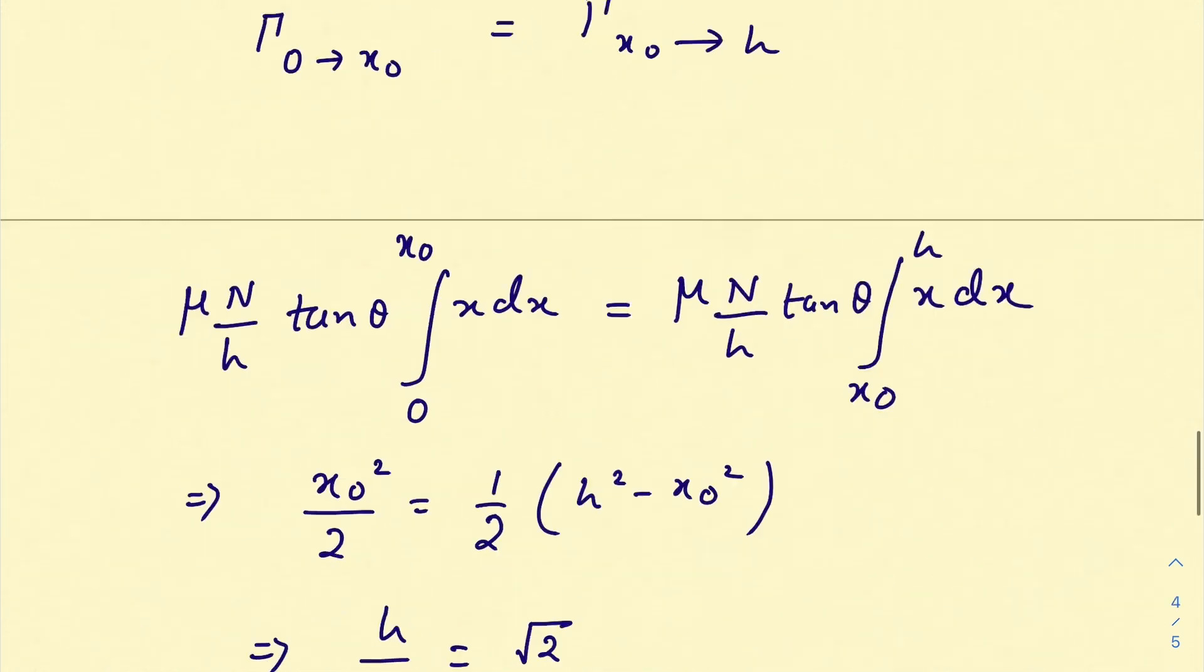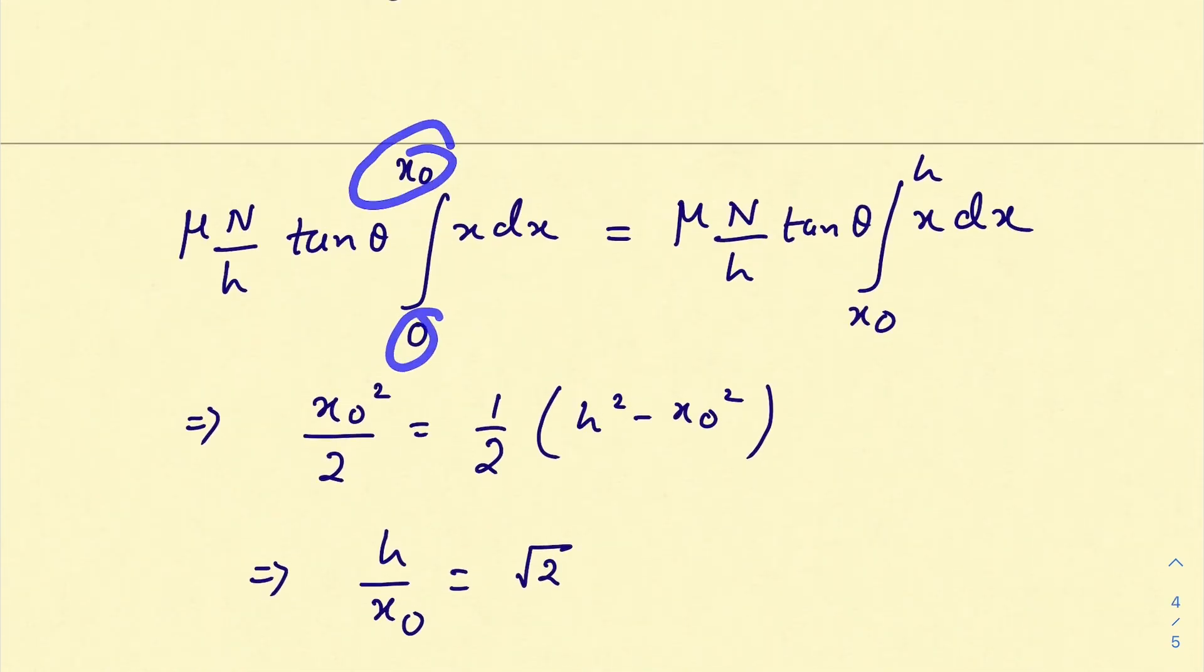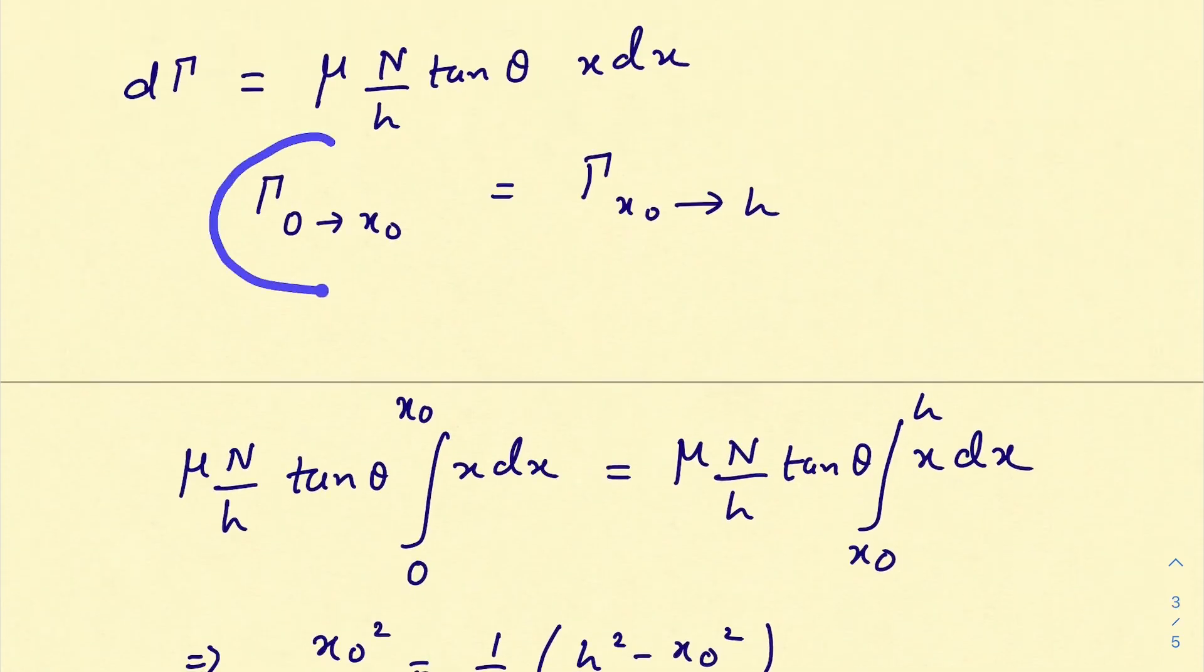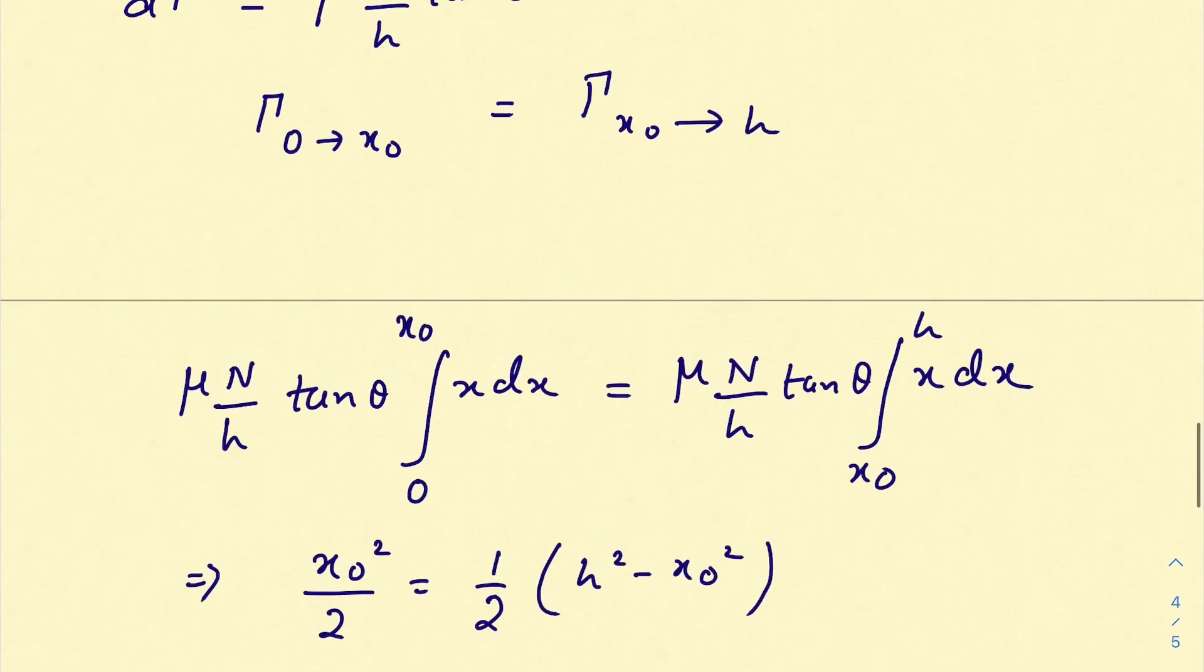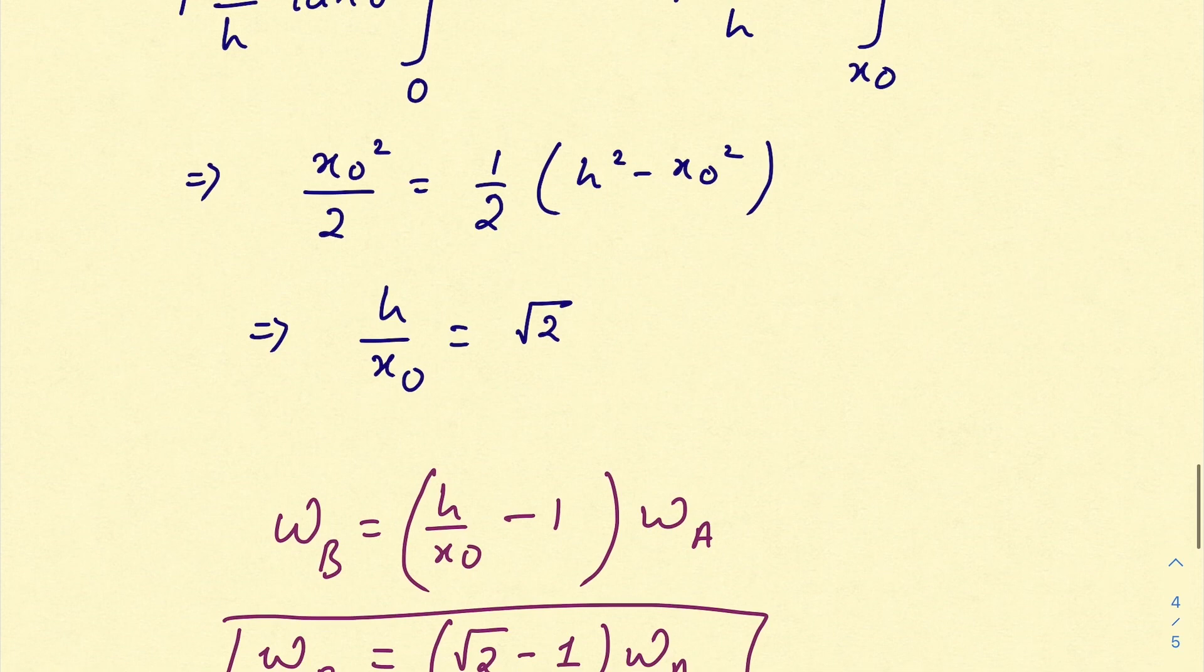We can integrate from 0 to x_0 and again from x_0 to h, which tells us that the clockwise and anticlockwise torque are equal and opposite. These things get cancelled out. Finding out, just integrate it, you will get the ratio of h/x_0, which is equal to √2.